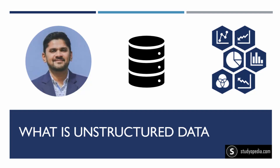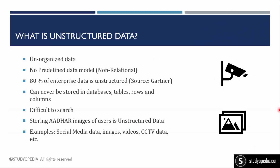What is unstructured data? This is what we need to manage today and what we talk about in data science. Unstructured data is unorganized data — you cannot save it in the form of rows and columns. It has no predefined data model; it is non-relational and non-tabular. 80% of enterprise data is unstructured, including social media data, CCTV surveillance images and video data, YouTube, Facebook, Instagram, and Twitter.